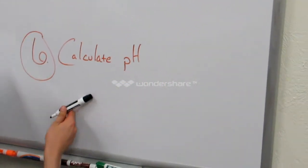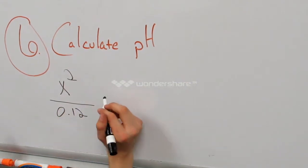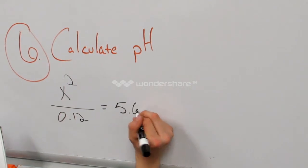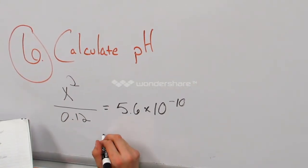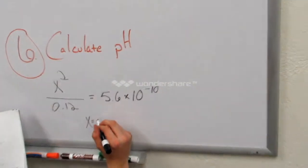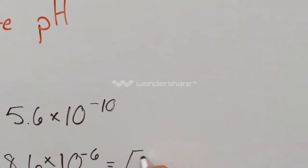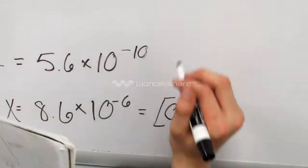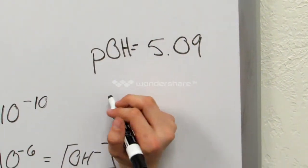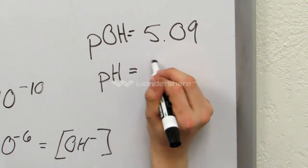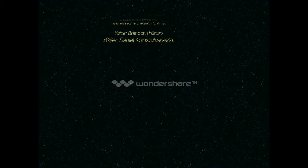Now it's time for our last step — the Problem part of our mnemonic: calculating the pH. You set x squared over 0.12 equal to KB, which is 5.6 times 10 to the negative 10th. Once you calculate this, you get x equals 8.6 times 10 to the negative 6th. Remember, x equals the OH-minus concentration. Take the negative log of this to get the pOH, then take 14 minus that answer to get the pH, which should be 8.91. And remember kids, don't stop doing equivalence determination problems!